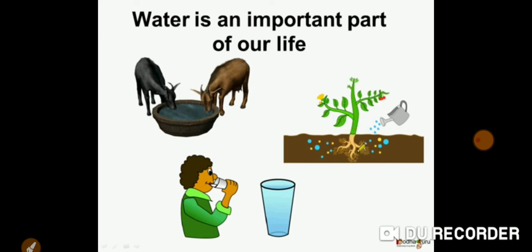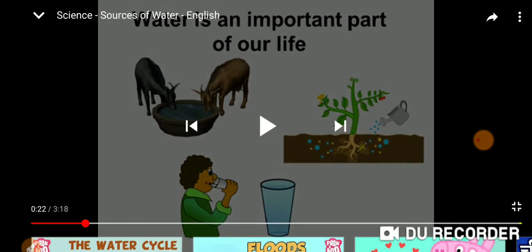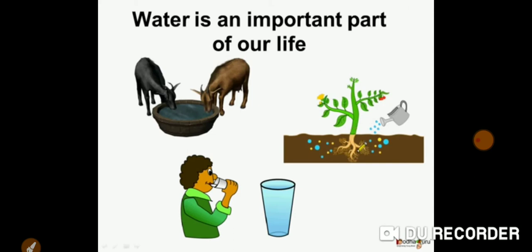Now, in order to understand this importance of water for plants, we'll be doing a simple activity. What you need to do is have a healthy potted plant. You will keep it inside your homes and then you will start observing it for a few days. During these days, you need not water it.